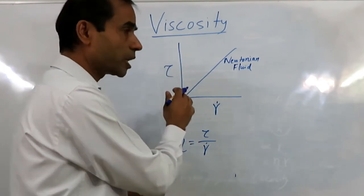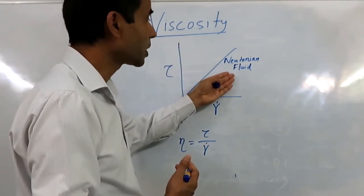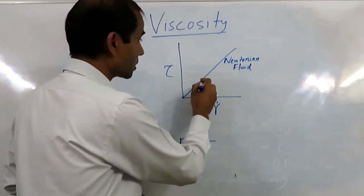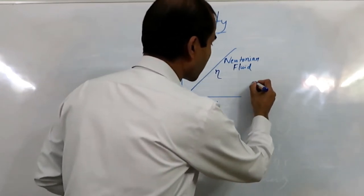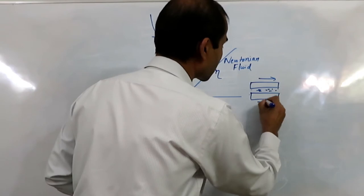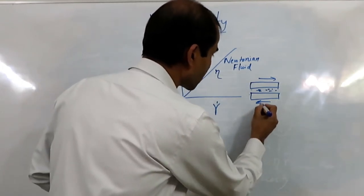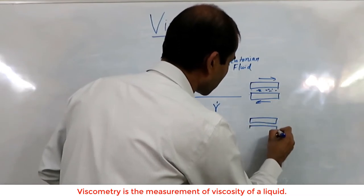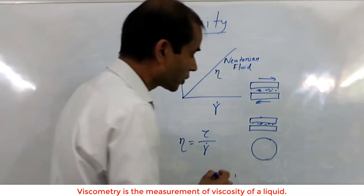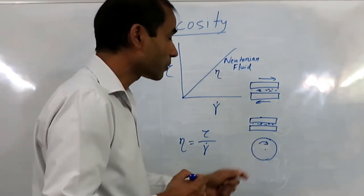Rheometry is basically the study of viscosity — not just Newtonian, but many other types of non-Newtonian behavior. To measure viscosity, in the simplest way we have two plates with liquid in between and apply shear stress to measure force and area. Another way is to use a circular disc: we have liquid between two circular plates and rotate one of them. By rotating, we can introduce shearing action and find out the shear stress.